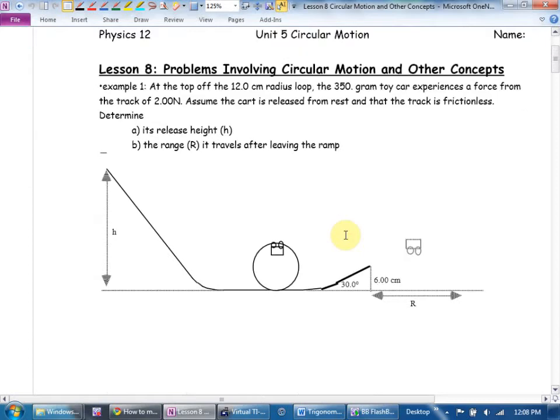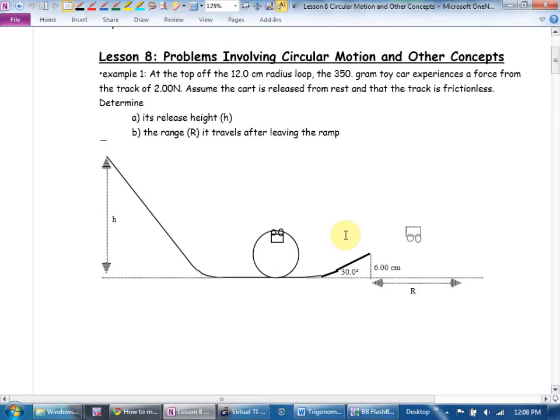Problems involving circular motion and other concepts. Example 1. Rollercoaster loops are a great example. Now, again, this is in our magic physics world where everything works perfectly. In real life, rollercoaster loops are not circular. If they made them circular, we'd black out. The G-forces are tremendous. They're what's called a clothoid loop. It's a teardrop shape.